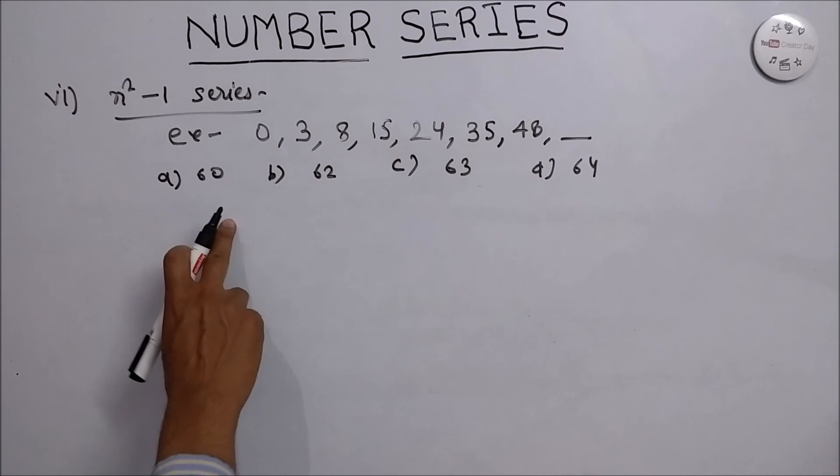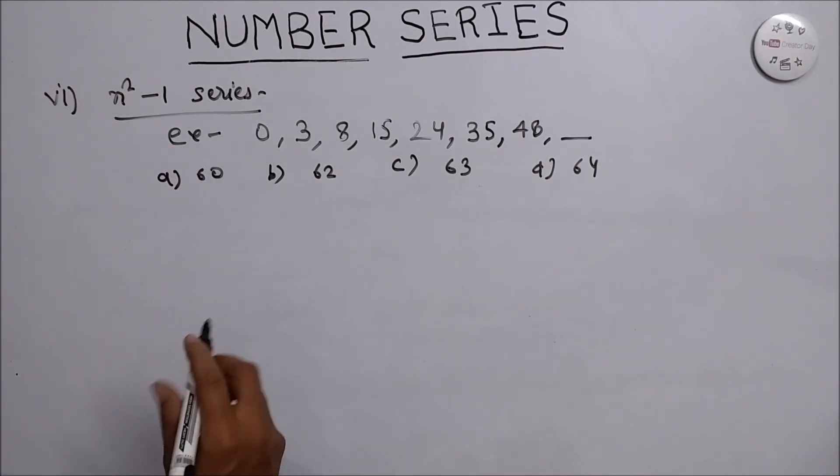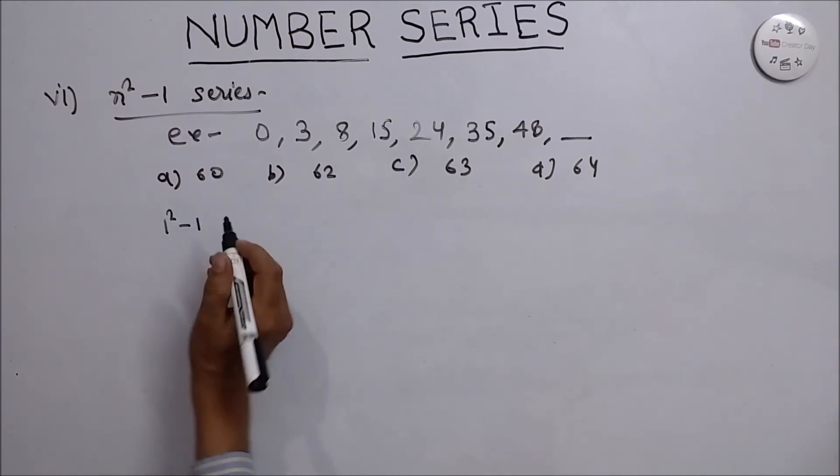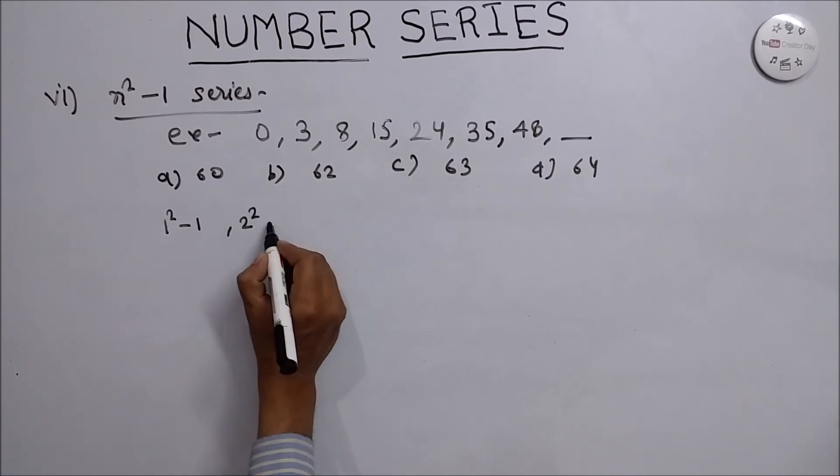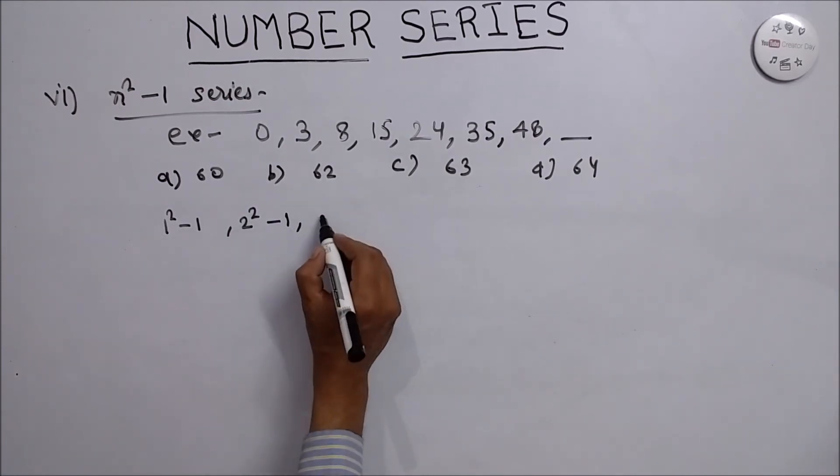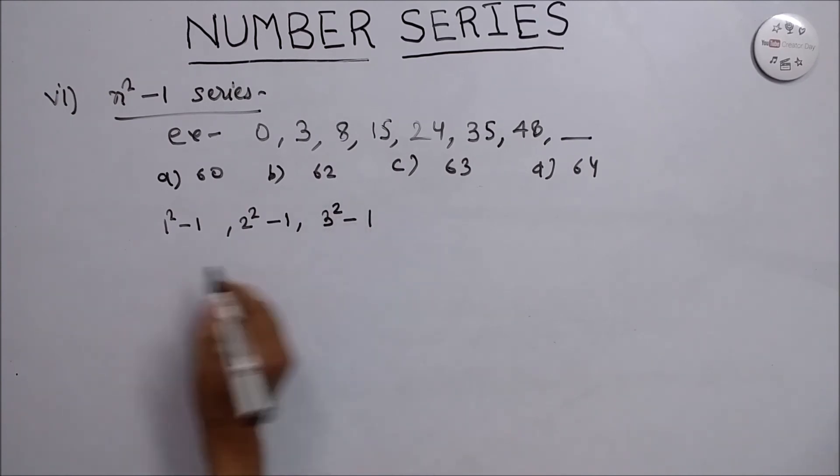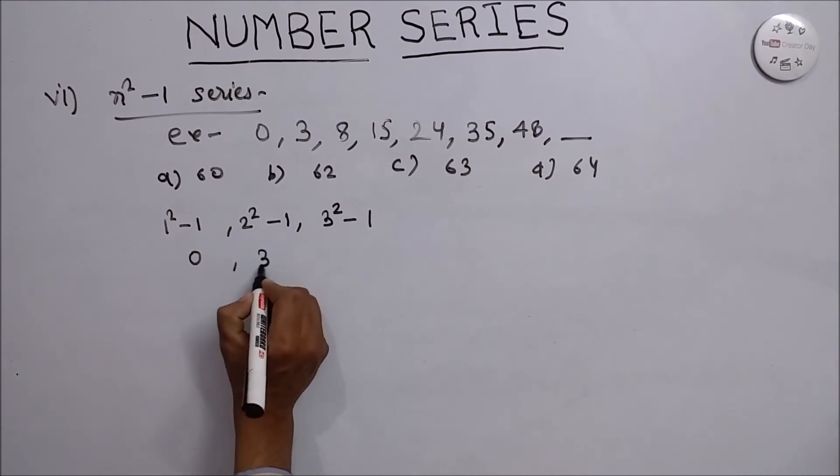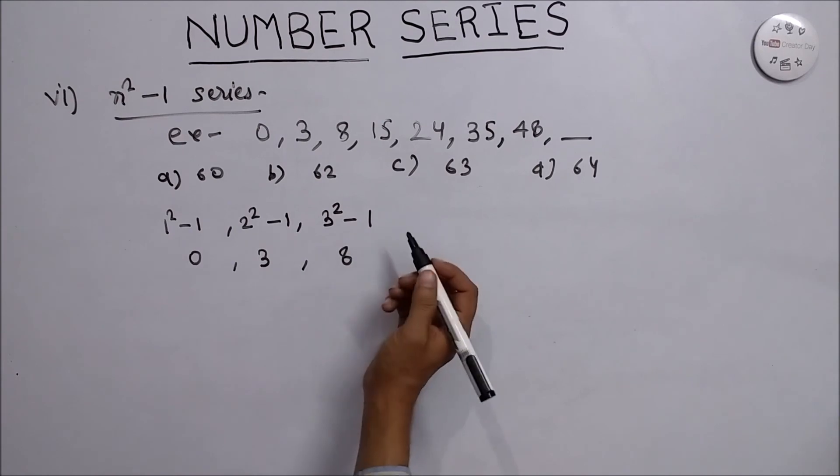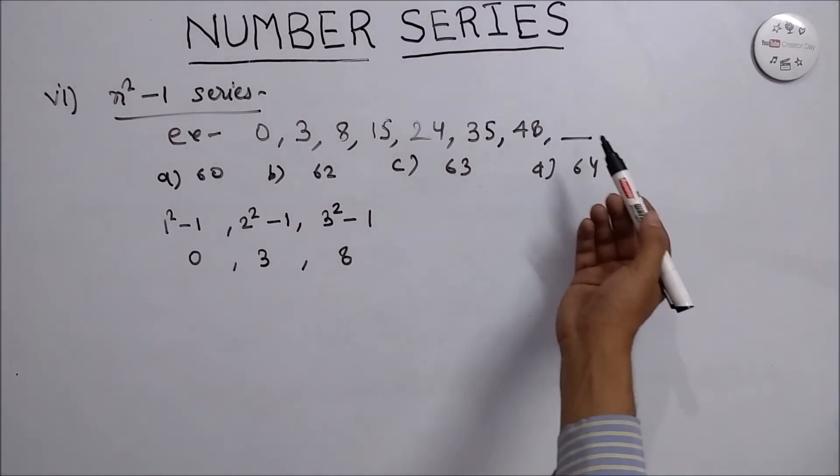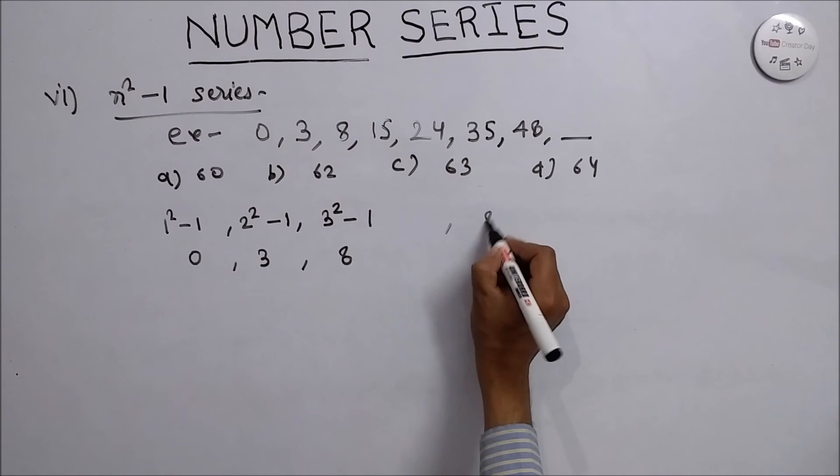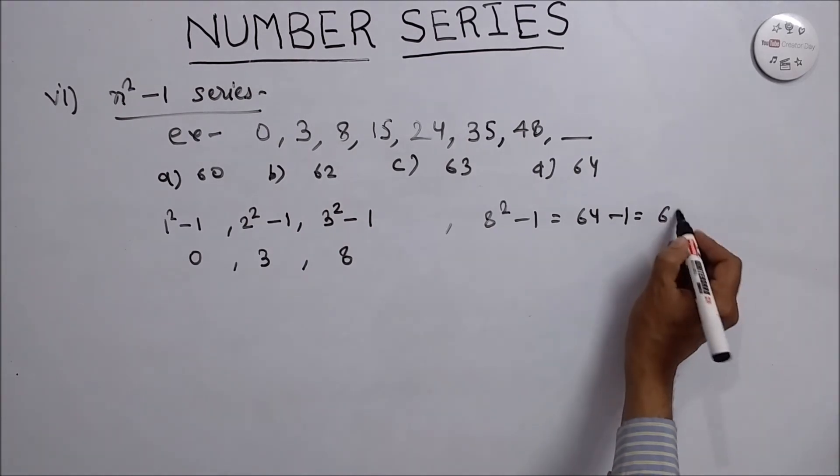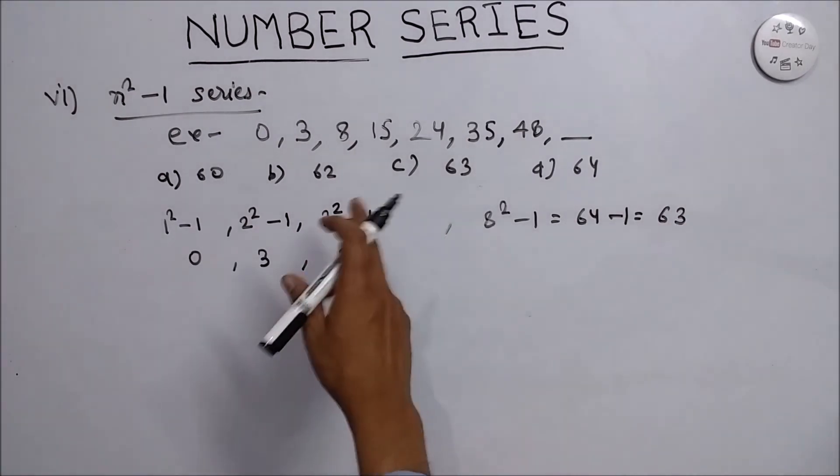As I am saying, this series is the n square minus 1 series. So the series will move like this: 1 square minus 1, 2 square minus 1, 3 square minus 1. That is 1 square minus 1 is 0, 2 square minus 1 is 3, 3 square minus 1 is 8. Similarly, if we go through this, what we will get is 8 square minus 1, that is 64 minus 1 is 63. This is one way to solve this kind of series.